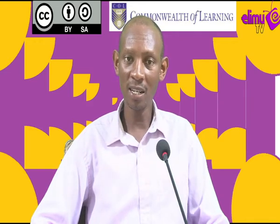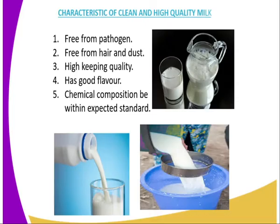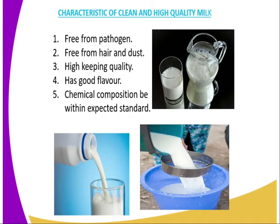The characteristics of clean and high quality milk. The first one, the milk should be free from pathogens. Pathogens are the disease-causing microorganisms. Number two, free from hair and dust. Number three, high keeping quality — upon milking, the milk should be able to stay for a few days before it is spread. Then we have good flavor; it should have the flavor of milk, but not the flavor of onions.